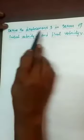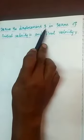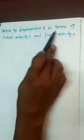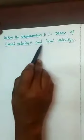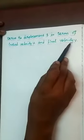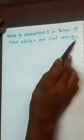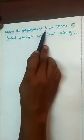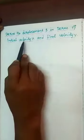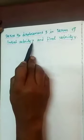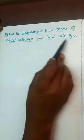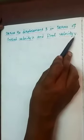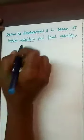Now, we are deriving the displacement equation. Derive the displacement S in terms of initial velocity U and final velocity V. So, the displacement we have to derive from the initial velocity U and the final velocity V.